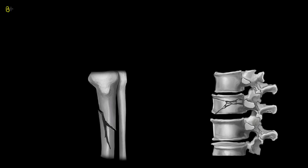Hi guys, welcome to this short tutorial on common types of bone fractures. Although this is more of a radiology topic, it's still important to know the basic ways in which our skeleton can be damaged. The first type of fracture we're going to look at is called a spiral fracture.